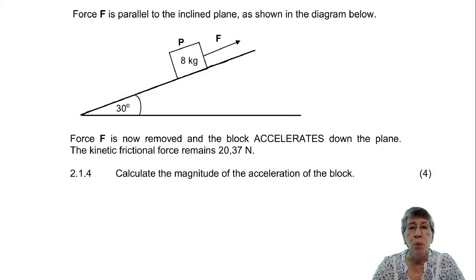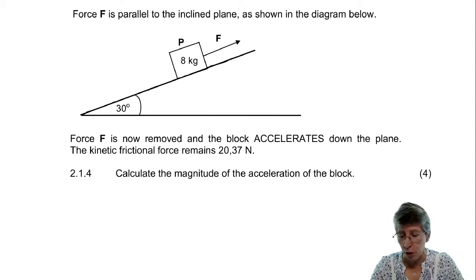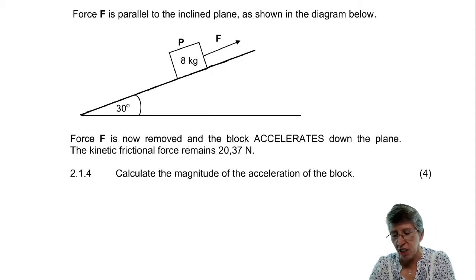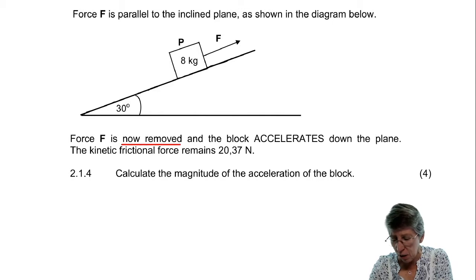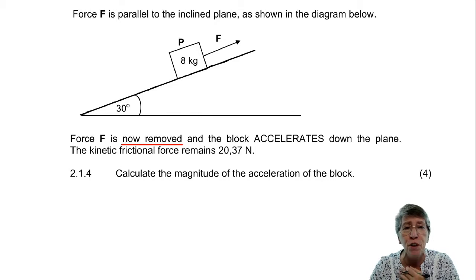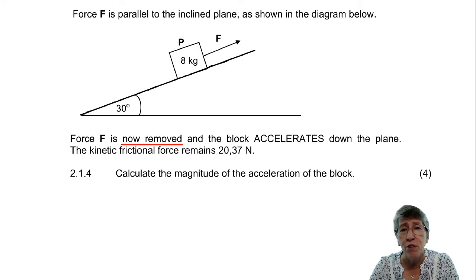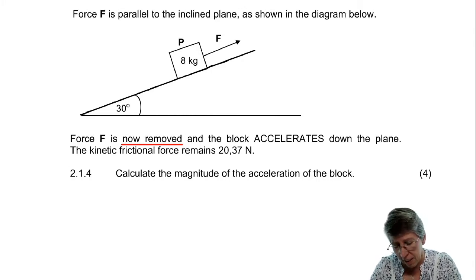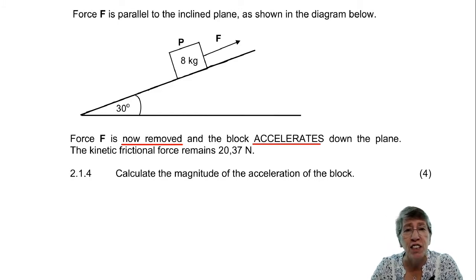In 2.1.4, we have the most dangerous type of question — when they change something halfway through. They tell you that F is now removed. Immediately everything is changing, and you have to be very careful about what stays the same and what is changing. F is removed, so there's no force upwards. Since the block is now accelerating down the plane, friction is going to be up, and we have a new positive direction.